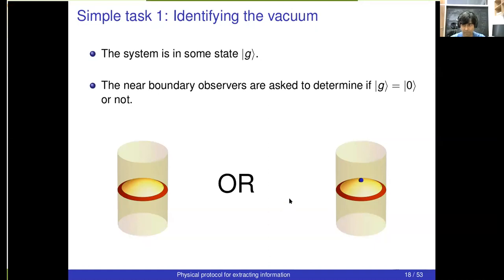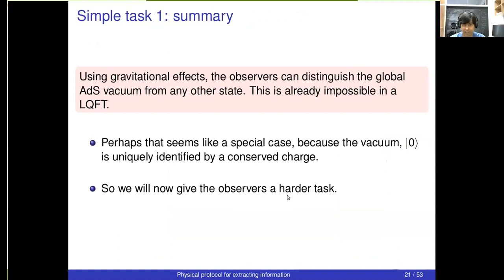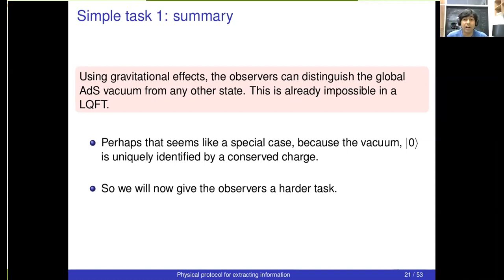You might say I'm cheating because the vacuum in gravity is identified by a conserved charge — the energy is zero, and there's only one state with energy zero. So maybe I can identify the vacuum but nothing more: once you go to excited states, many states will have the same energy. That's a very natural objection, and now we're going to answer it — the observers have already done something impossible in local QFT, and now we'll show how they can do even more.